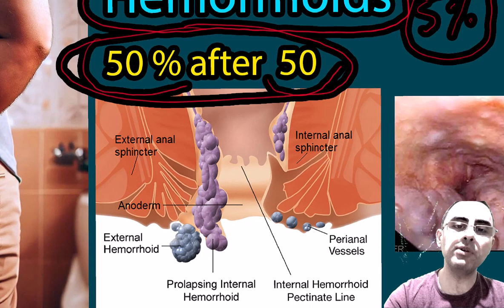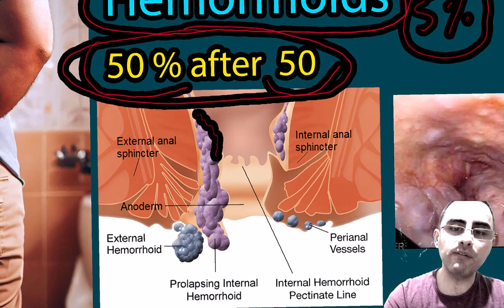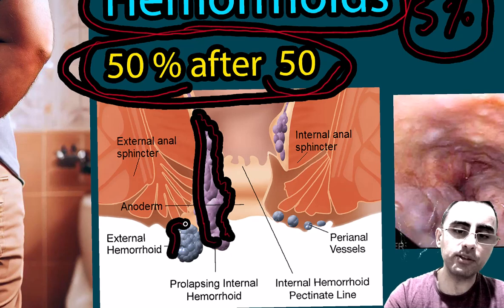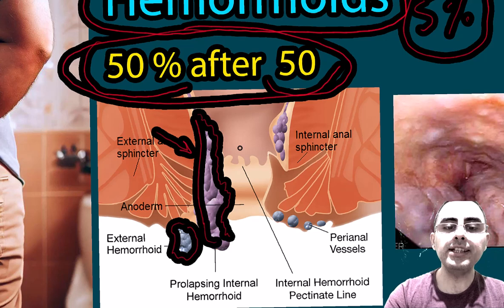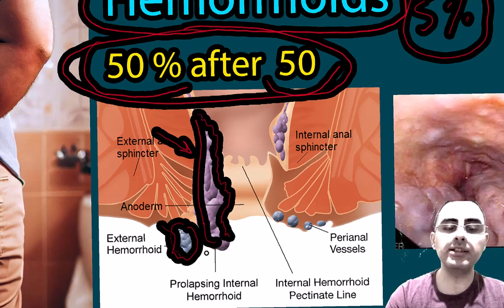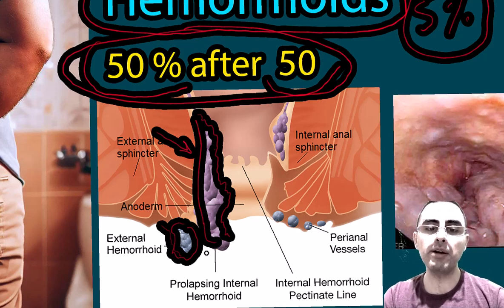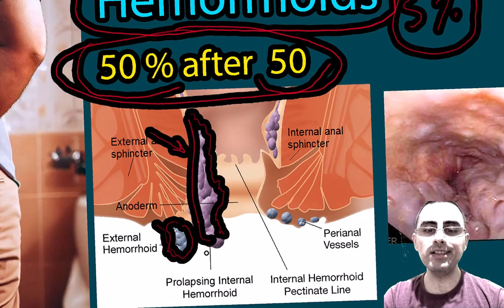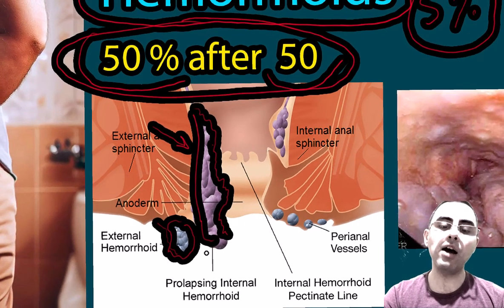Now let's discuss what hemorrhoids actually are. Hemorrhoids are dilated blood vessels or dilated veins inside the rectum or outside the rectum. When they are inside the rectum, they are called internal hemorrhoids. When they are outside the rectum, they are called external hemorrhoids. So we have two types: inside the anus and outside the anus.